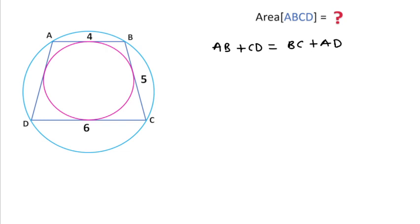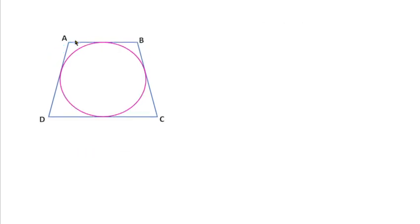How does this relation come? I'm going to prove this first. Let's suppose this is quadrilateral ABCD with an inscribed circle. Then I am saying AB plus CD equals BC plus AD. How is this possible?